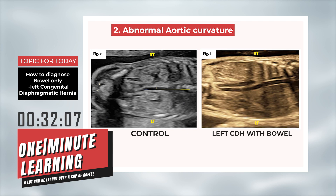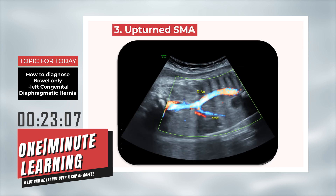The second clue is: if you manage to look at the thoracic descending aorta in a coronal section of the chest, you would find an abnormal curvature to the right side.